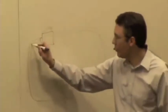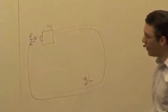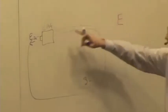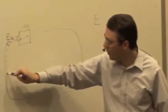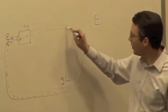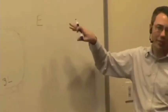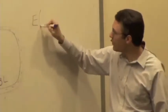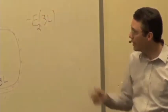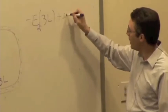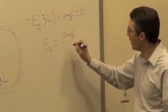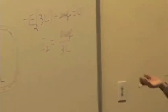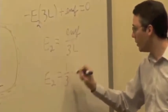If I do the same thing for circuit two, E2 points in the same direction but now the length is 3L. Going through, the potential difference is negative E2 times 3L, and crossing the battery gives plus EMF. Setting equal to zero: E2 equals EMF over 3L. So how does it compare to circuit one? E2 is three times smaller — E2 equals one-third of E1.